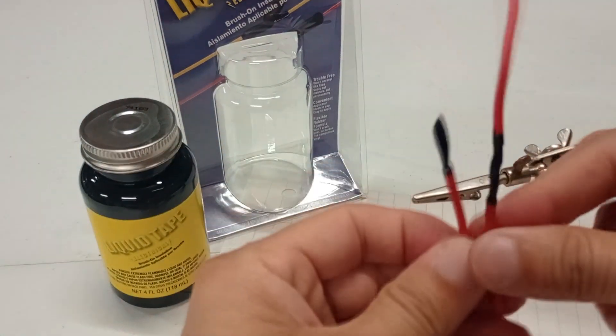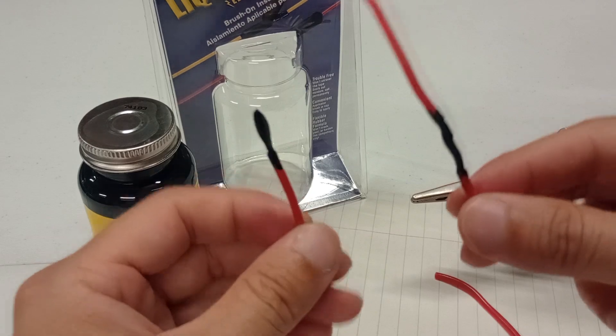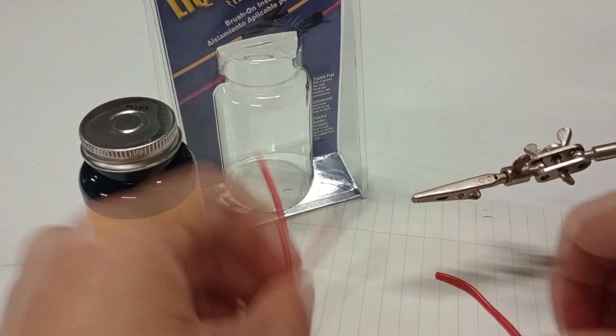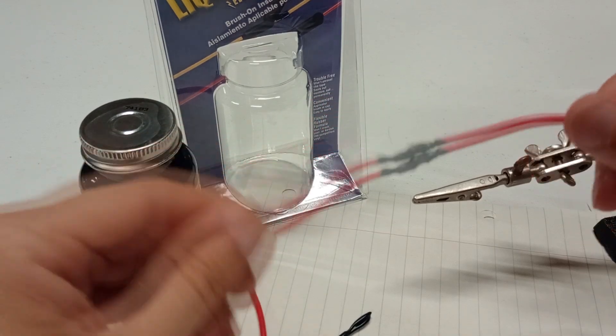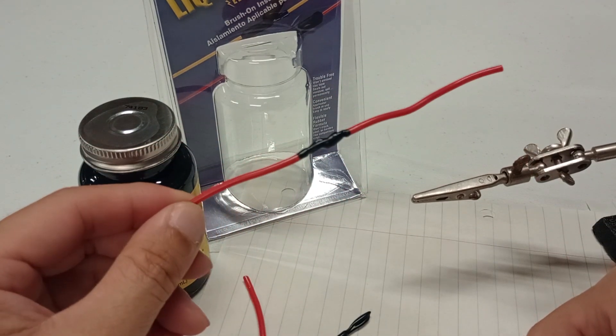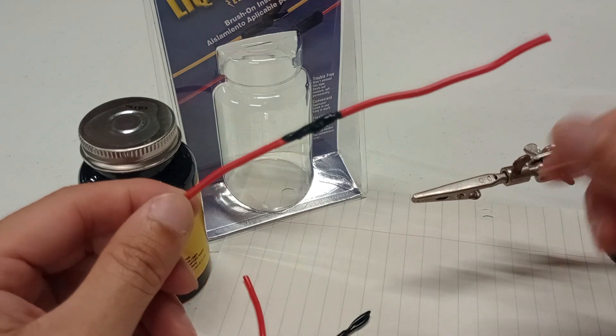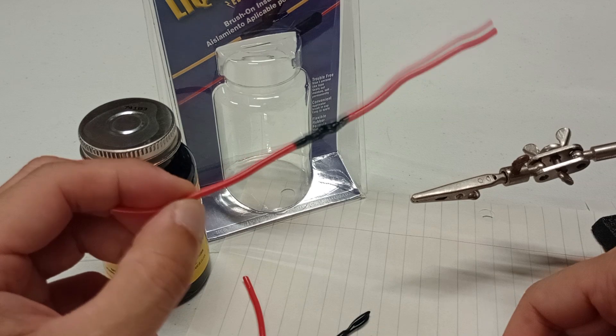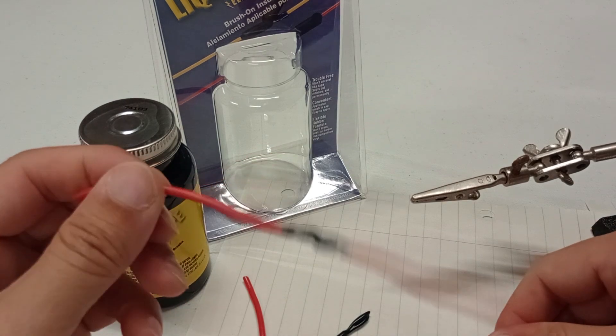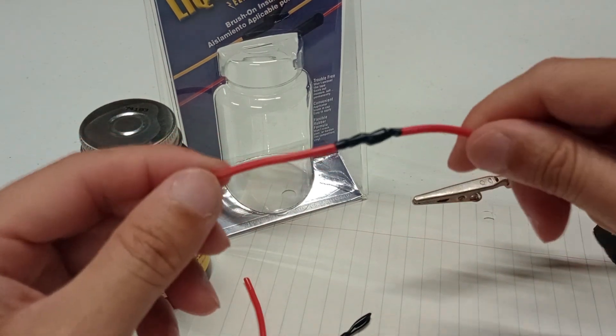So these are the two pieces. I just went over this piece. This is the piece where I put two wires together, I wrapped them together and then I put the liquid tape over them.